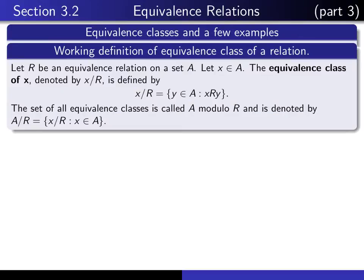Here's the fundamental definition. We start with an equivalence relation R on a set A, and we give ourselves any X in the underlying set A, and we define what we mean by the equivalence class of X. This is how it's denoted: X slash R, and it's defined to be the set of all Y in the underlying set A such that X is R-related to Y. That's called the equivalence class of X.